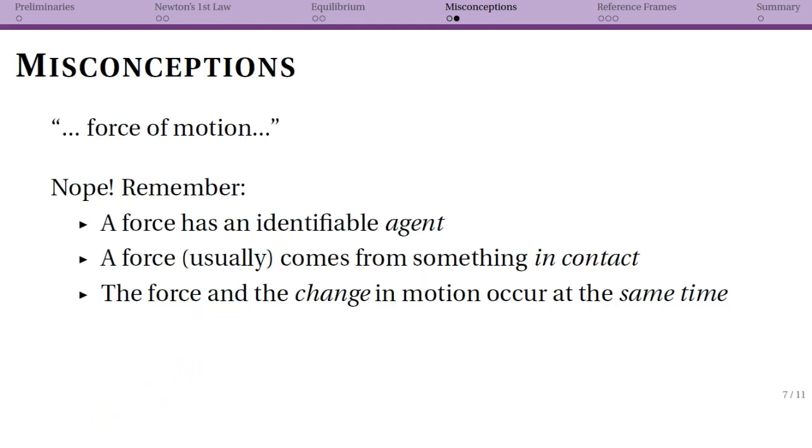So in particular, the thing that I want you to remember is that there's no such thing as a force of motion. The term that we might use is inertia, and inertia isn't a force. Inertia is just the property of an object to obey Newton's first law, i.e., something that every object has. So remember that any time you want to talk about a force, it must have an identifiable agent, meaning there is a thing that is causing the force.